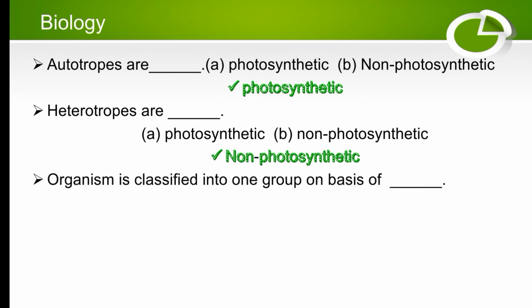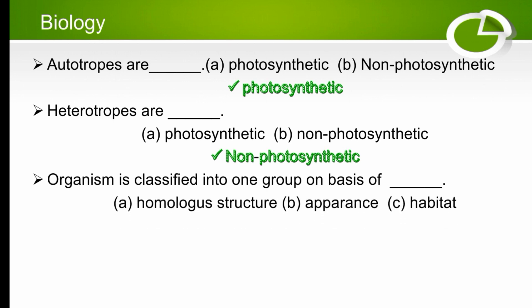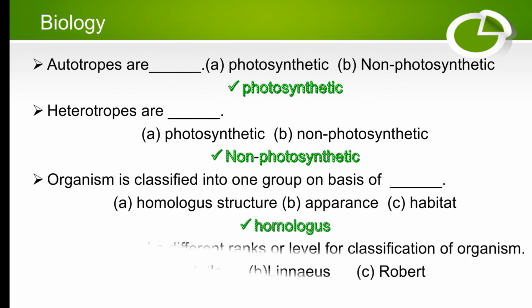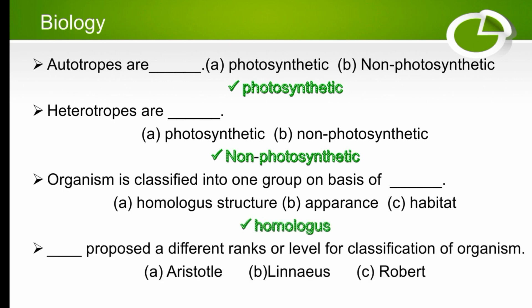Organisms are classified into one group on the basis of — homologous structure, appearance, or habitat? The right option is homologous structure. Organisms are divided into one group on the basis of homologous structure.